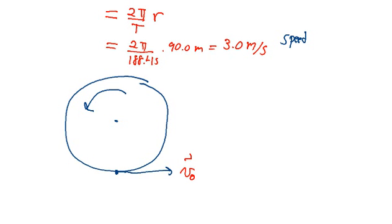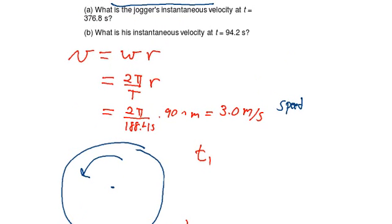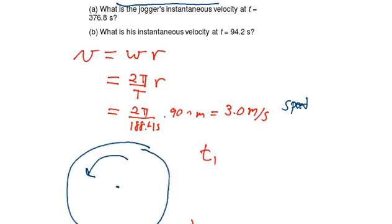So the first time that we are given in part A of the problem is 376.8 seconds. So 376.8 seconds, which is equal to 2 times the period that was given in the beginning part of the problem.